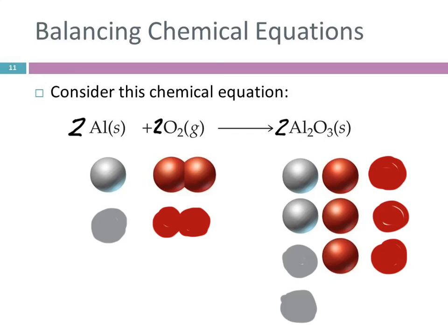Because when I put a two in front of there, it multiplies all these coefficients—I mean, sorry, all those subscripts. It multiplies the subscripts for the formula immediately after it. So this is saying I have two of these units. Each unit has two aluminums and three oxygens. So then I'm going to double the number of oxygens. I'm going to double the number of aluminum atoms. Well, this isn't really fixing our problem yet, is it?